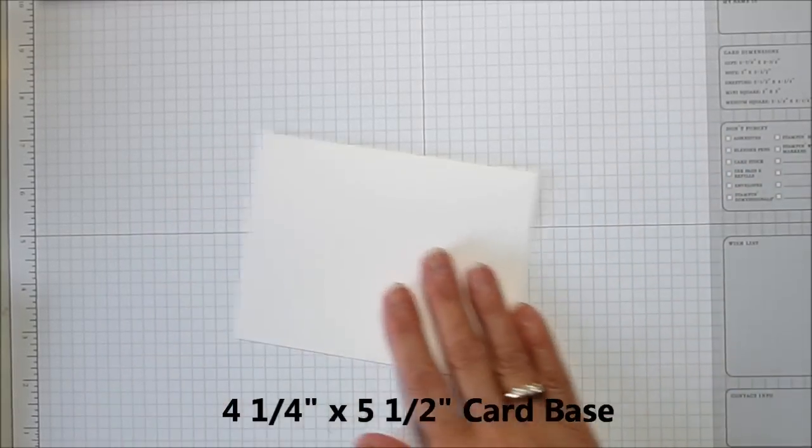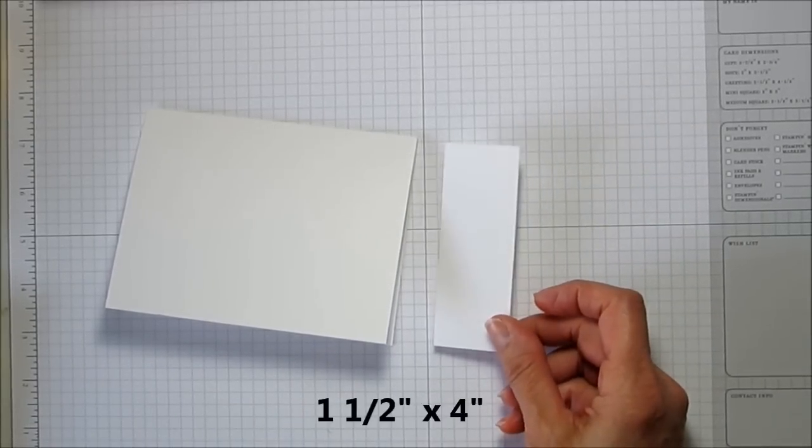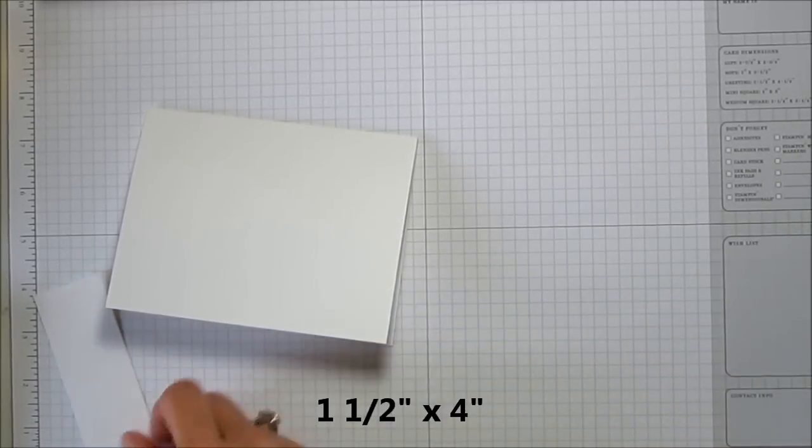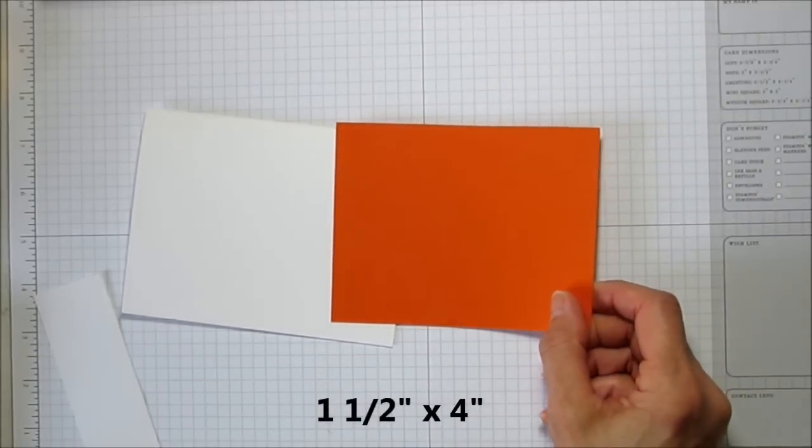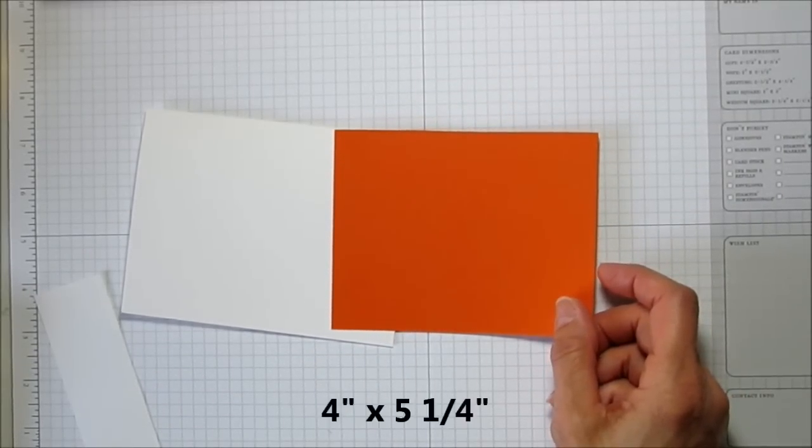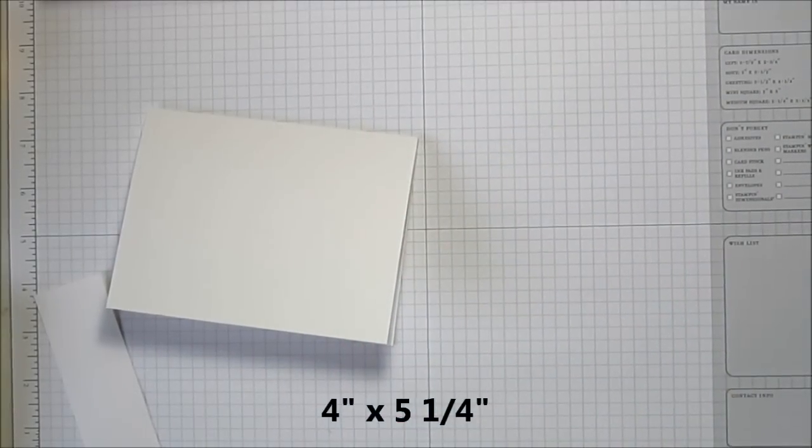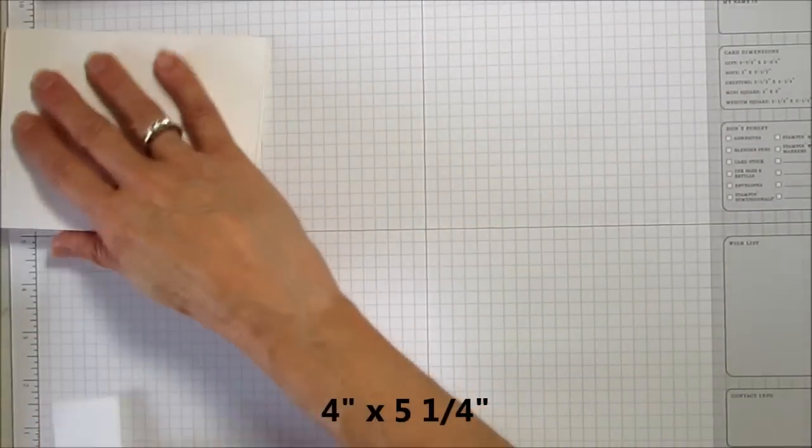This is four and a quarter by five and a half in Whisper White. You'll need another piece of Whisper White that's one and a half by four, then one piece in Tangerine Twist that's four by five and a quarter, and then a piece of scrap Whisper White to stamp our sentiment on.